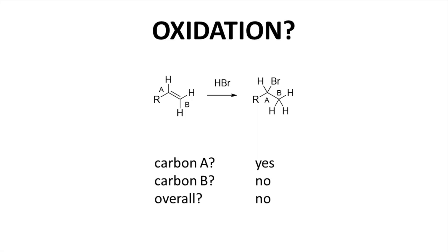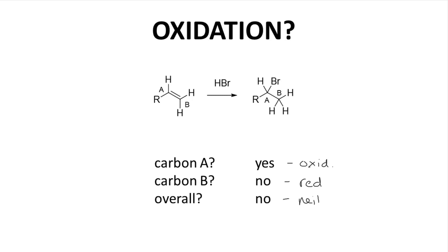The previous alkene additions were oxidations — but how about the addition of HBr? I have labeled the carbons of the alkene A and B. Carbon A loses a C–C bond and gains a C–Br bond, so carbon A has been oxidized. Carbon B loses a C–C bond and gains a C–H bond — that's actually a reduction. So what is this overall reaction — an oxidation or reduction? Carbon A is oxidized, carbon B is reduced, and overall the net process for the molecule is neither. Not every reaction has to be categorized as an oxidation or a reduction. So not all additions are oxidations.